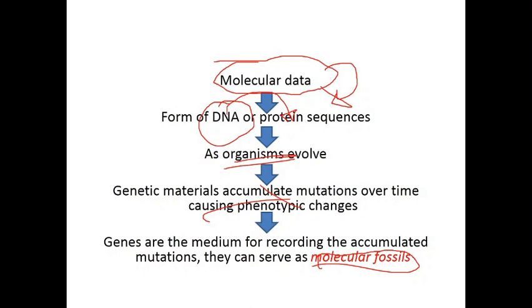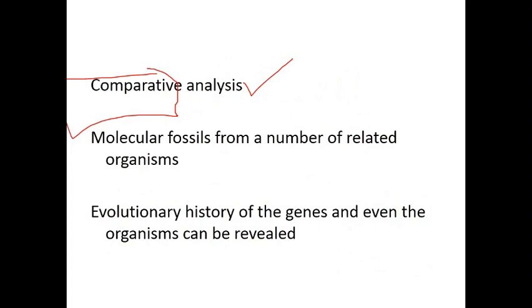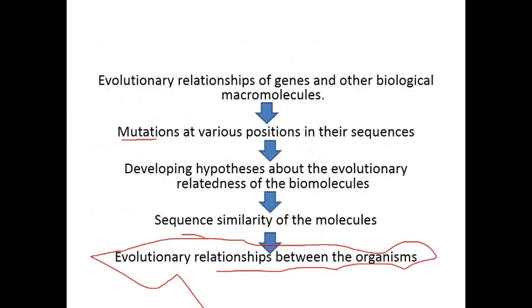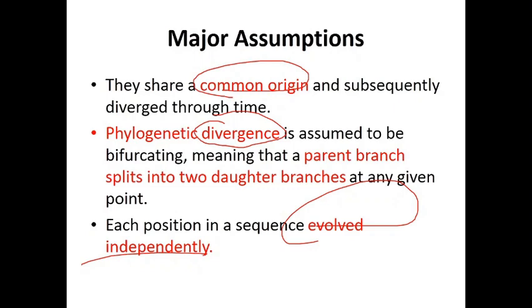To learn evolutionary relationships using molecular data, we need to isolate the gene or protein, sequence it, and then do comparisons. Based on similarity from those comparisons, we can identify the organisms. There are certain major assumptions involved when using molecular data: they should have a common ancestor, independent evolution, and phylogenetic divergence.